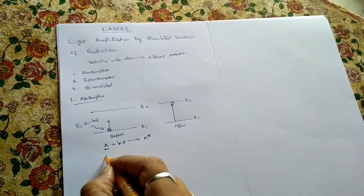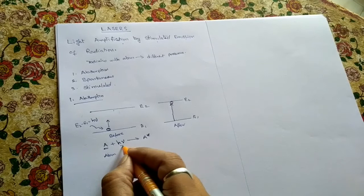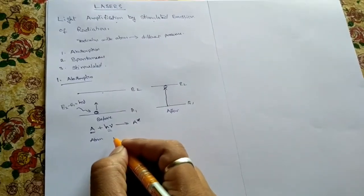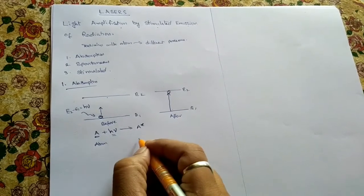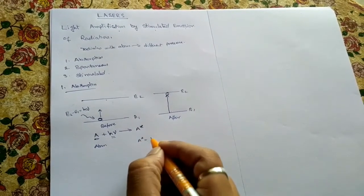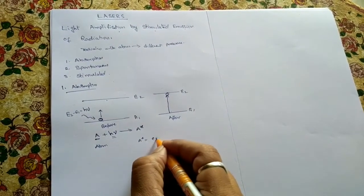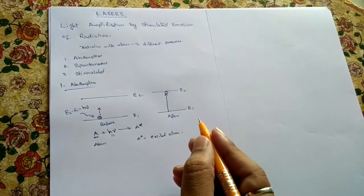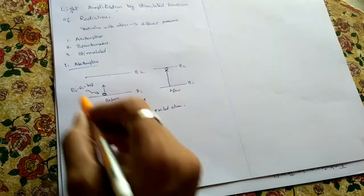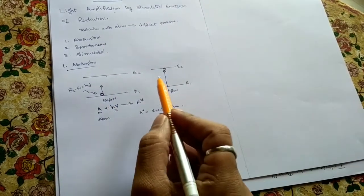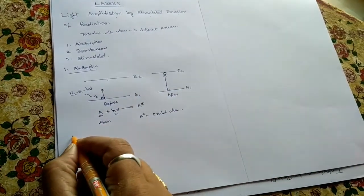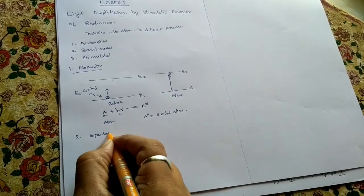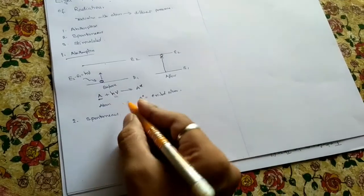We represent absorption as: A plus h-nu gives A-star. Here, A is the atom, h-nu is the energy in the form of radiation, and A-star is the excited atom. This total process is called absorption.